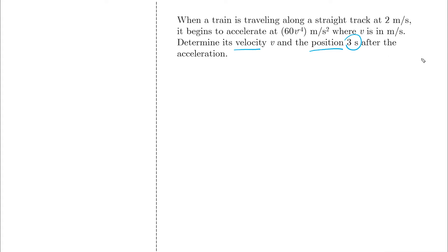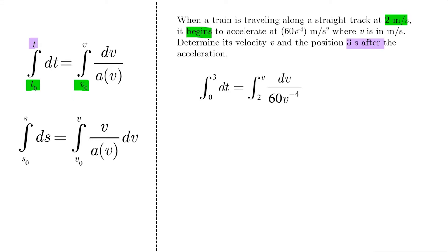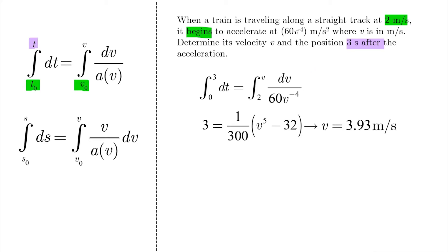Since a is a function of v, we have only two equation options to start with. The first equation is what we can use because of the given initial conditions and the given t. By using this equation, we end up with a in the denominator, which can be taken up with a power of positive 4, making the simple integration result in an equation from which we can solve for v.